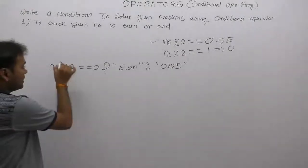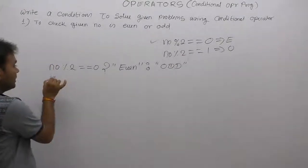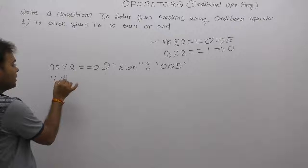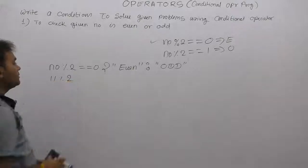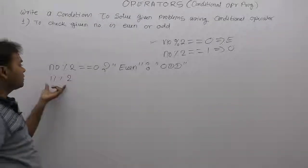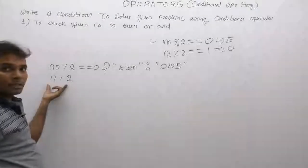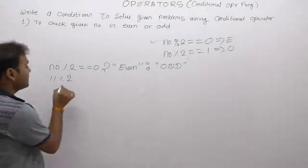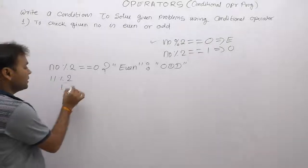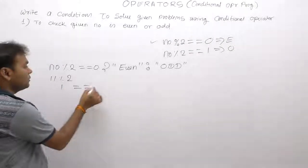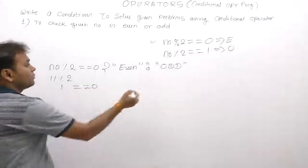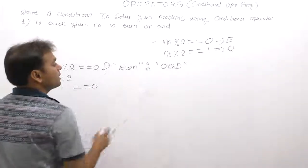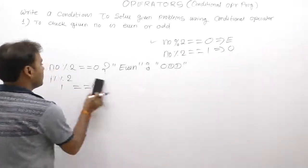For example, if number is eleven: eleven modulo by two — eleven is not an even number, it is odd. The remainder is one. Then one equal equal zero — condition is false. False means display odd.